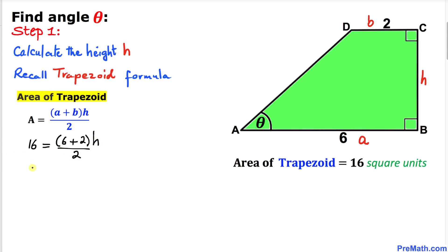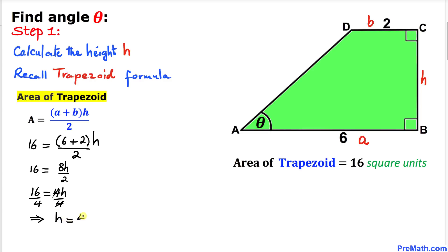Let's simplify: 16 = 8h / 2, so 16 = 4h. Dividing both sides by 4, the 4s cancel, so our height h turns out to be equal to 4 units.